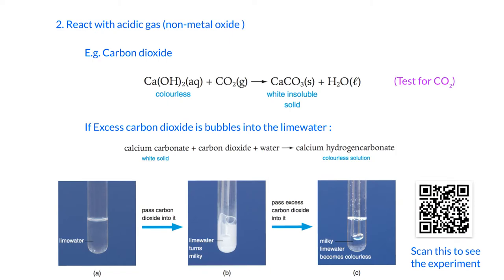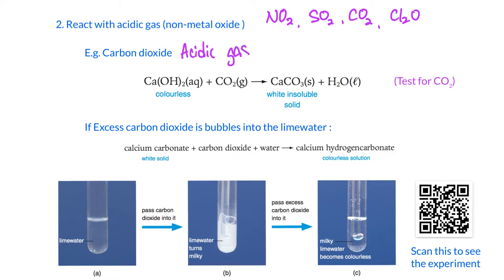Second reaction: alkaline reacts with acid gas. In your textbook this is listed as reacting with non-metal oxides, and in general non-metal oxides are acidic. Examples include NO₂, SO₂, CO₂, and Cl₂O. For this chapter (Chapter 14) we focus on carbon dioxide only. The first alkaline we use is calcium hydroxide, also called lime water. Carbon dioxide reacts with lime water to give a milky solution.